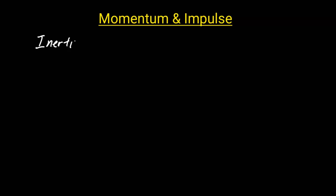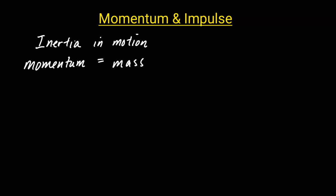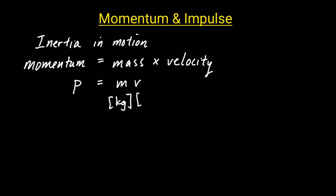In this video, we will be discussing momentum and impulse. Momentum can be thought of as inertia in motion. The equation for momentum is mass times velocity. The symbol you'll often see is p equals mv. The units for mass is kilograms, the units for velocity is meters per second, and so the unit for momentum is kilograms meters per second.